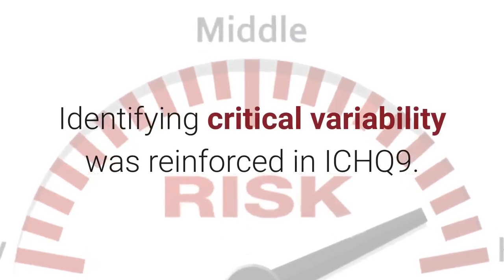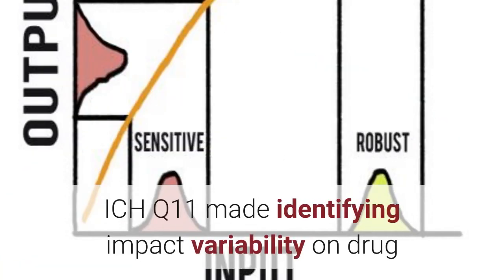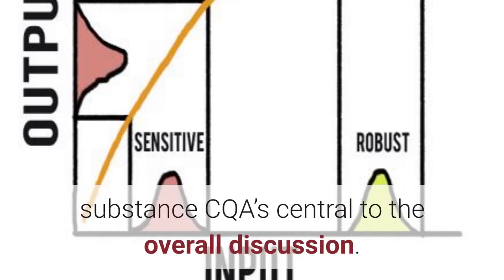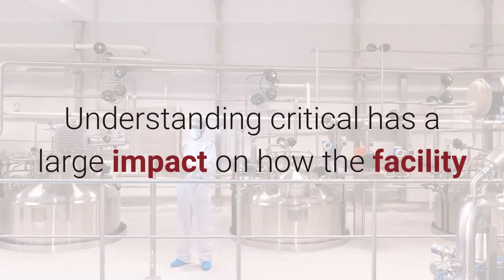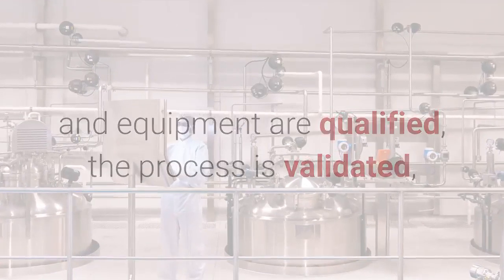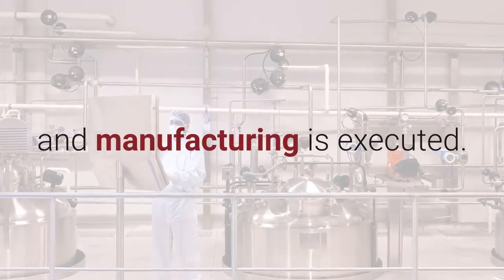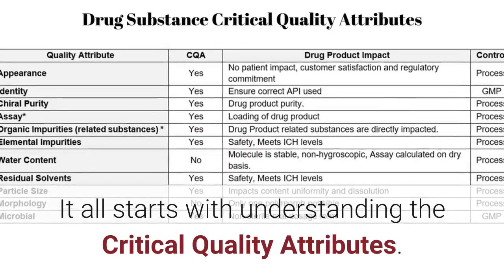Identifying critical variability was reinforced in ICH Q9. ICH Q11 made identifying the impact of variability on drug substance CQAs central to the overall discussion. Understanding 'critical' has a large impact on how the facility and equipment are qualified, the process is validated, and manufacturing is executed. The purpose of this series is to bring clarity to these requirements — it all starts with understanding the critical quality attributes.